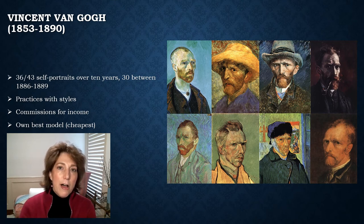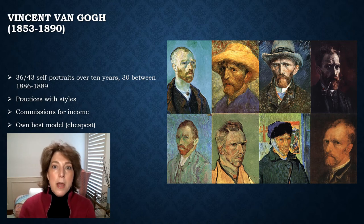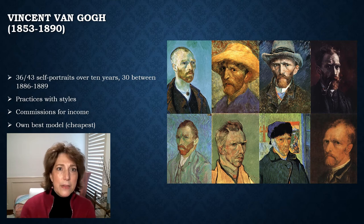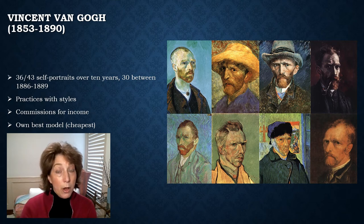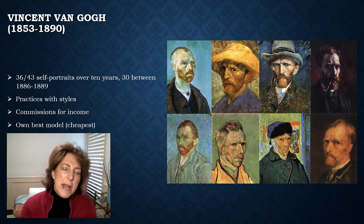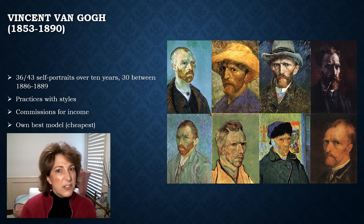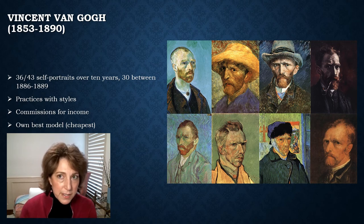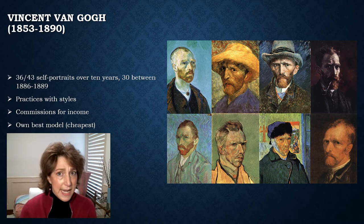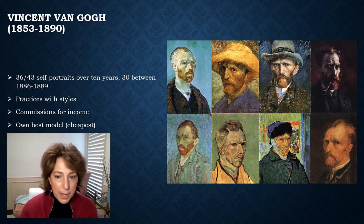While Vincent was collecting woodblock prints and living with Theo in Paris, Theo fell in love — and three's a crowd — so Vincent decided to go to the south of France to start an artist's commune. The only artist he could talk into coming was Paul Gauguin. They painted together for a couple of months, but then the infamous ear-cutting episode occurred: Gauguin decided Vincent was a little too crazy and left, Vincent was very upset, cut off a piece of his ear, gifted it to a friend in town, and was then committed to an asylum.